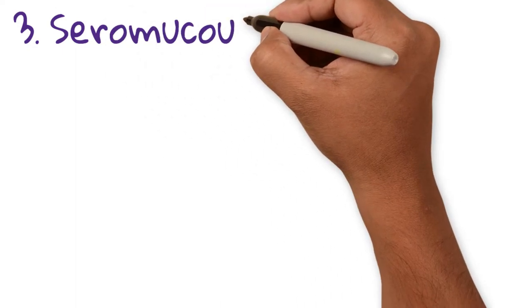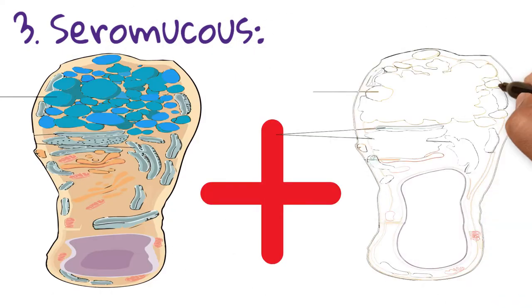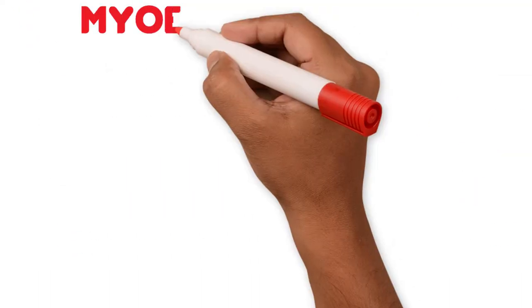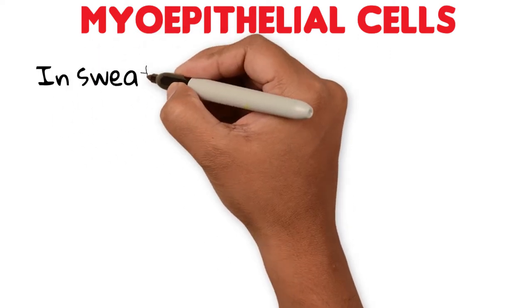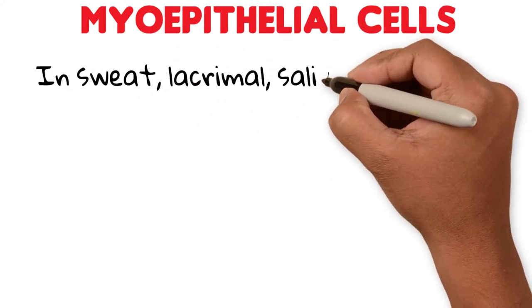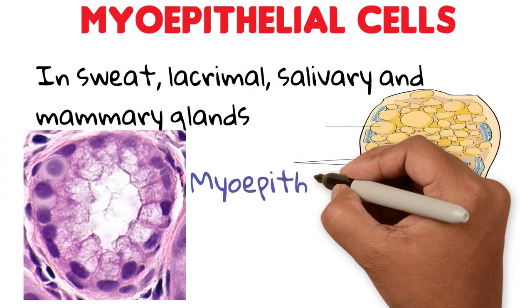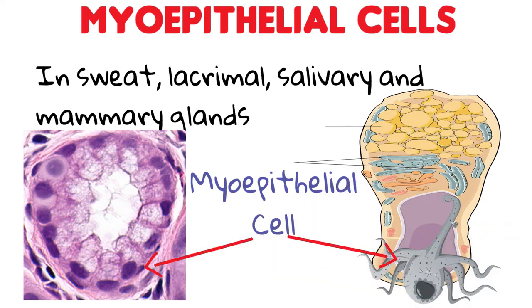Seromucous secretion is a mixture of the previous two, with a watery, mucus, and enzymatic secretion. In addition to secretory cells, the epithelia of exocrine glands — such as sweat, lacrimal, salivary, and mammary glands — also have myoepithelial cells at the basal pole. These are contractile cells with long processes that hug the gland cells like an octopus. When they contract, the secretory products are propelled from the secretory portion to the conducting portion — the ducts — so they can be excreted.